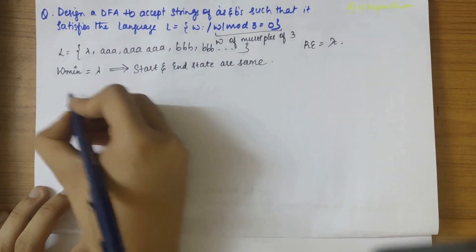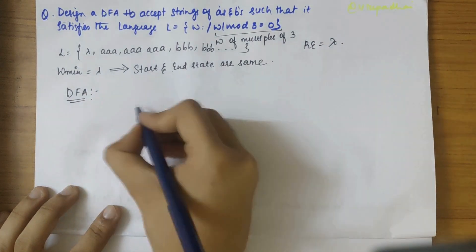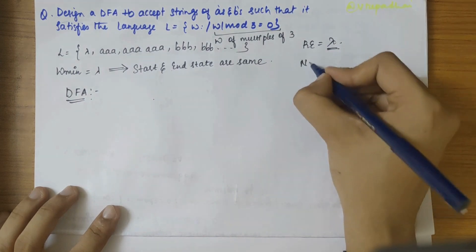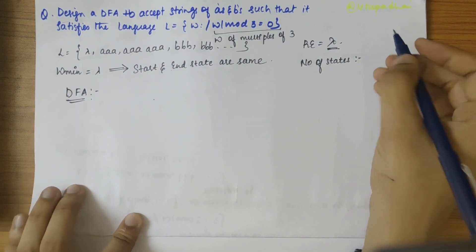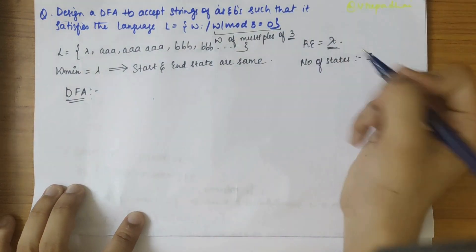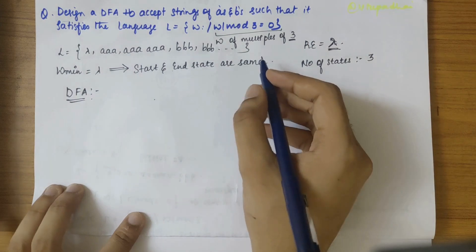So now let's draw the DFA for this. So here, lambda is there. That means how many states we should consider might be your question. So we have to consider three states here because we have taken it as multiples of three. But again, lambda because the start and end state are same.